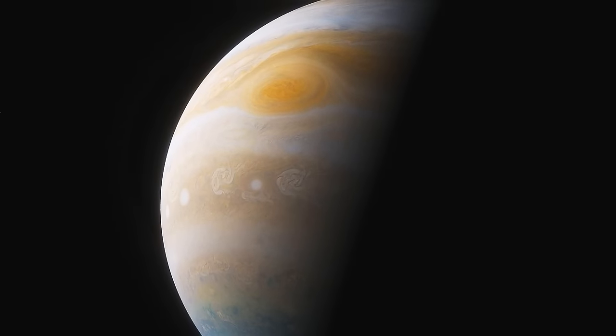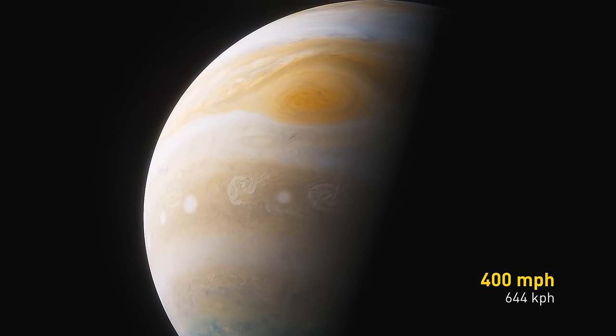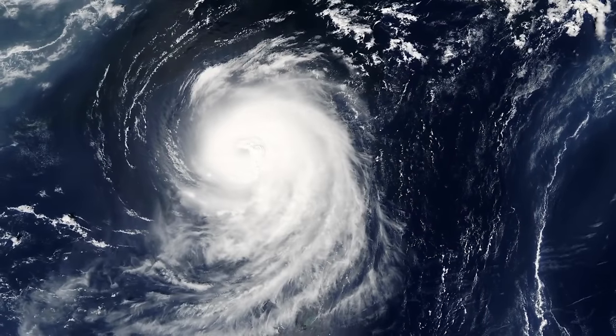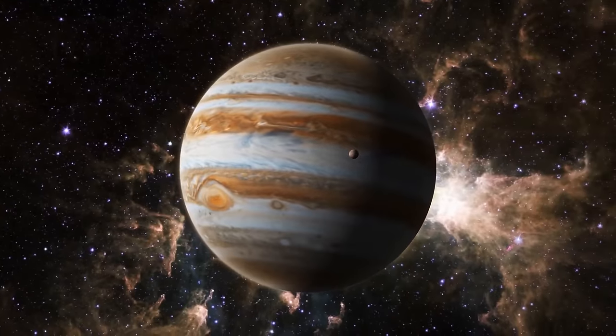The wind speed at the edges of the storm can reach a mind-boggling 400 miles per hour. That's faster than Earth's tornadoes. At the same time, if you found yourself at the center of the Great Red Spot, you wouldn't be too impressed. The winds there move way more slowly.